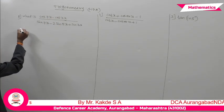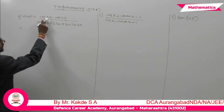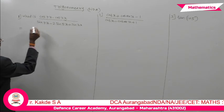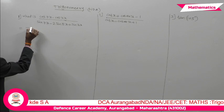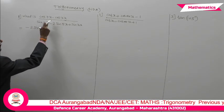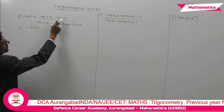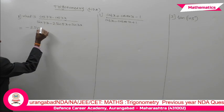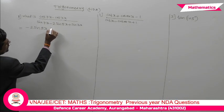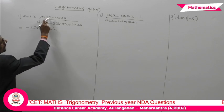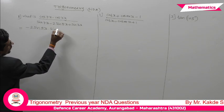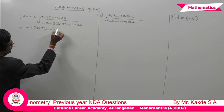Consider the numerator: cos C minus cos D, where C is 7x and D is 3x. The formula gives minus 2 times sin((C+D)/2) into sin((C-D)/2). So that is: 7x plus 3x gives 10x divided by 2, that is 5x, into sin of 7x minus 3x = 4x divided by 2, that is 2x.